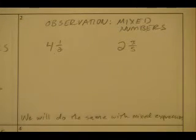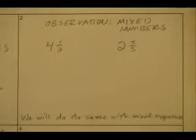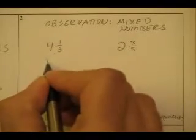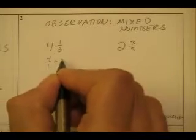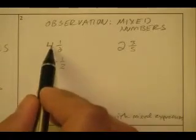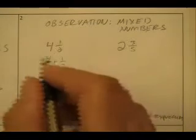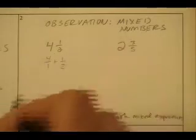I have a mixed number, four and a half. I want to make this four and a half an improper fraction — basically write this as a fraction. So four and a half is the same thing as four over one plus one half. I've got four over one and I want to add it to one half. We've got to find the LCD, which would be between one and two, which would just be two.